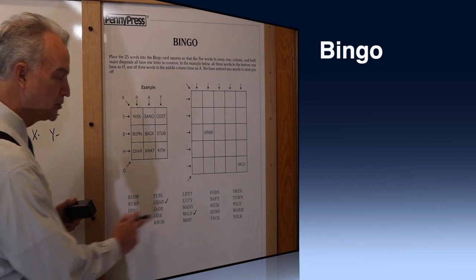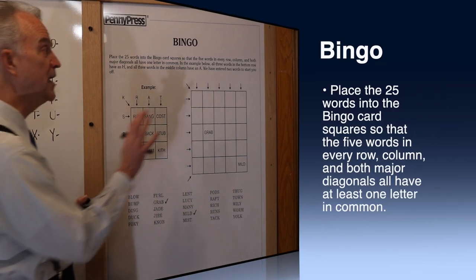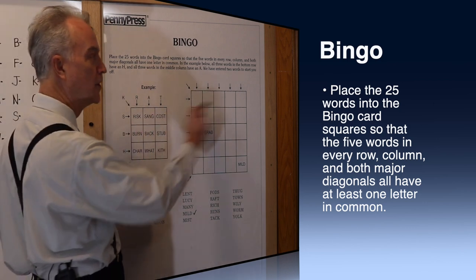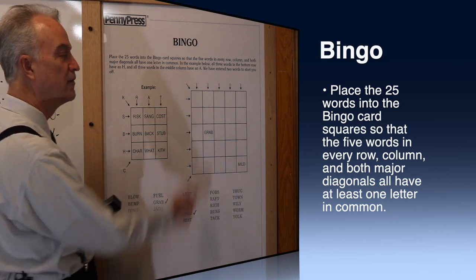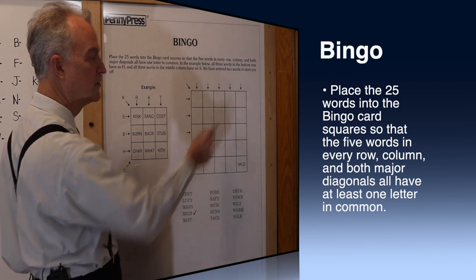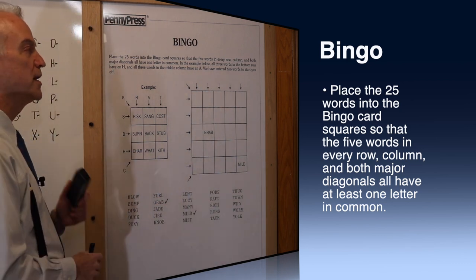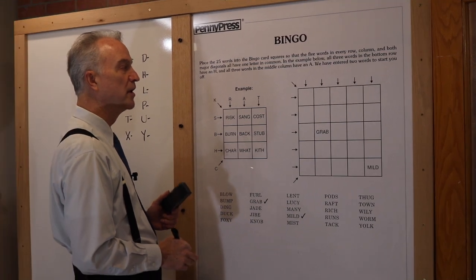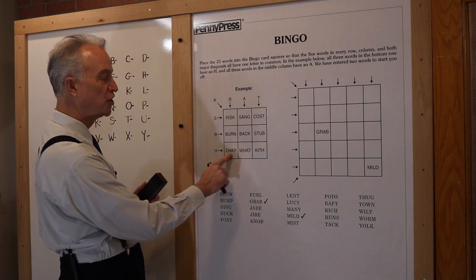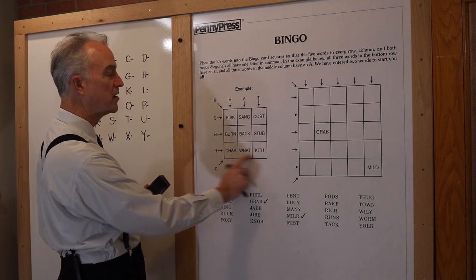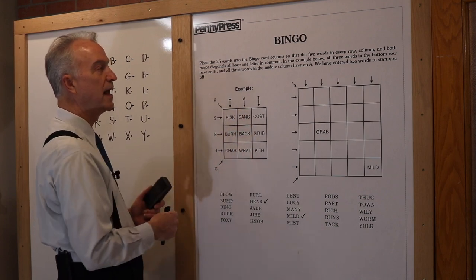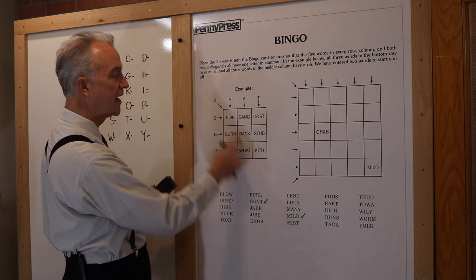Place the 25 words into the Bingo card squares so that the 5 words in every row — rows go horizontally — every column — vertically — and both major diagonals, those are the five-square diagonals, all have at least one letter in common. In the example, all three words in the bottom row have an H: char, what, and kith. All three words in the middle column have an A: sang, back, and what. And the diagonals all have a K.